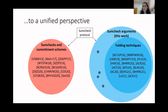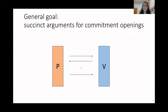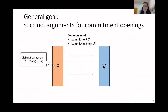We call this variant sumcheck arguments. Our general goal is to provide succinct arguments for commitment openings. Again, we have a prover and a verifier, but now their common input is a commitment C and a commitment key CK. The goal of the prover is to convince the verifier that they know a message M that is a valid opening of the commitment C. The succinctness goal says that the communication of this protocol should be way smaller than the size of the message M.